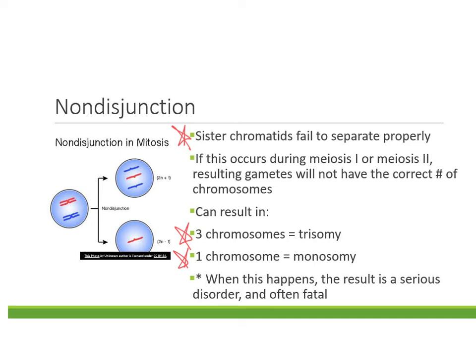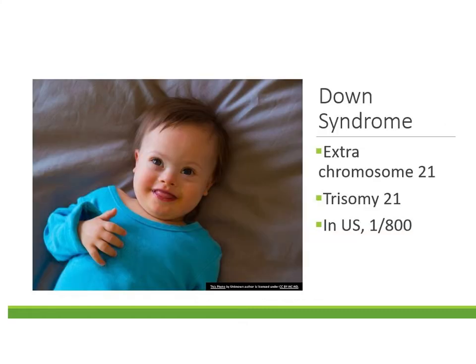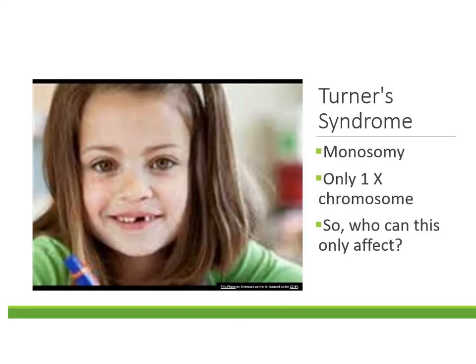Non-disjunction is a big deal, especially for humans — there are only a few cases where an embryo would survive it, and most of the time it's fatal, resulting in a miscarriage. An example of having three chromosomes is Down syndrome, which occurs when there's an extra chromosome on the 21st pair. It's called trisomy 21, and it's fairly common — about one out of every 800 people in the U.S. have Down syndrome.